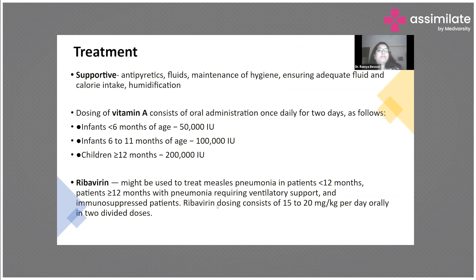Coming to treatment, there is no specific antiviral treatment for measles — treatment is mainly supportive. Give paracetamol and antibiotics for the child, ensure adequate fluids, and make sure the patient is well hydrated. If the patient develops diarrhea, there will be significant fluid loss to manage. Maintenance of hygiene — masking and handwashing — is also important, as is calorie intake, since measles can result in significant malnourishment.